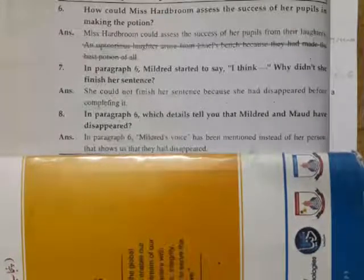Question six: How could Miss Hardbroom assess the success of her pupils in making the potion? Miss Hardbroom could assess the success of her pupils from their laughter. Question seven: In paragraph six, Mildred started to say 'I think' - why didn't she finish her sentence? She could not finish her sentence because she had disappeared before completing it. Question eight: In paragraph six, which details tell you that Mildred and Maud have disappeared? In paragraph six, Mildred's voice had been mentioned instead of her person, that shows that they had disappeared. So question answers are done. Thank you so much.